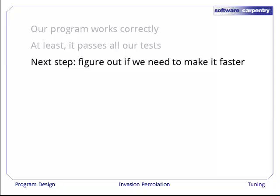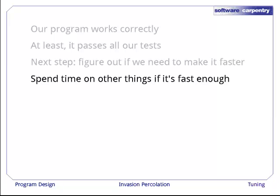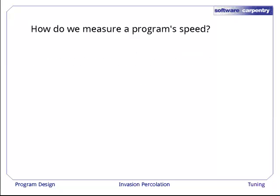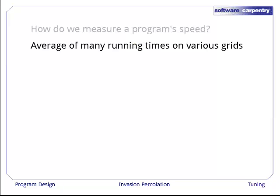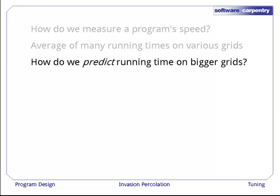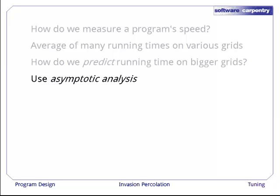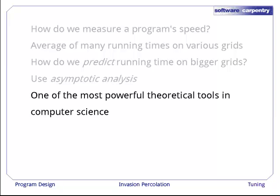The next step is to figure out if we need to make it faster. If it's already fast enough to generate the results we need, we should spend our time doing other things. How do we measure a program's speed anyway? One possibility is to take the average of running it over and over again on grids of various sizes. But that won't necessarily help us predict the running time on larger grids. Instead, we're going to use a technique called asymptotic analysis, which is one of the most powerful theoretical tools in all of computer science.